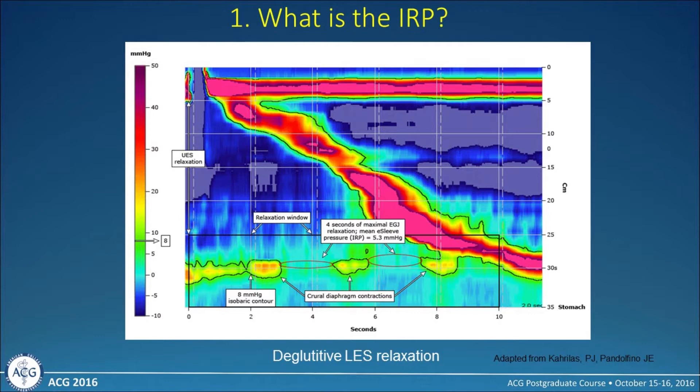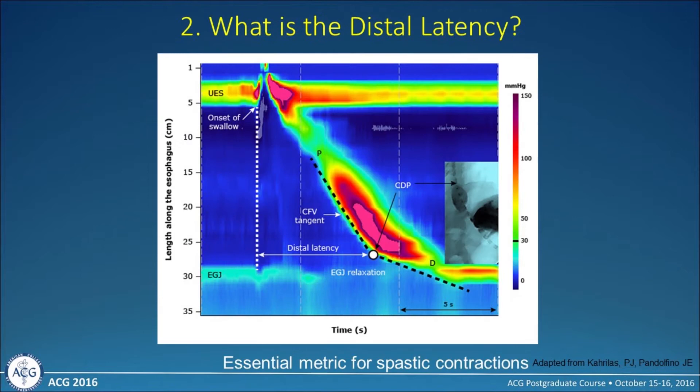When we talk about the IRP, we're discussing how well the lower esophageal sphincter relaxes after the initial swallow. A big portion of the Chicago criteria has to do with deciding whether someone's IRP or relaxation of the lower esophageal sphincter is normal or not. The distal latency is a metric we look at to assess spastic contractions — it relates to how quickly the peristaltic wave travels down and the acuity of the angle of that swallow.